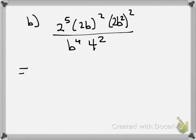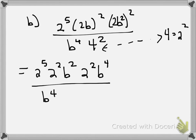All right, so know that 4 is the same thing as 2 squared. So I get 2 to the 5th, 2 squared, B squared, 2 squared, B to the 4th, divided by B to the 4th.